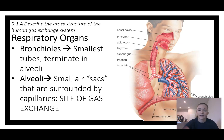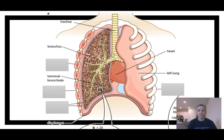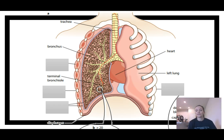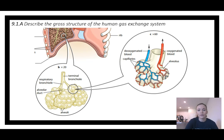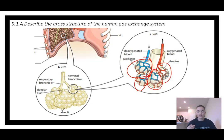Once you get to the super tiniest tubes, bronchioles terminate in alveoli — small air sacs surrounded by capillaries, literally like little balloons that fill and deflate with oxygen and CO2. So the pathway is: trachea branches into bronchi, branches into bronchioles, and at the very end are the alveoli. The blood drops off CO2 to be exhaled, and oxygen from the air diffuses in — that's where blood becomes oxygenated in the lungs.